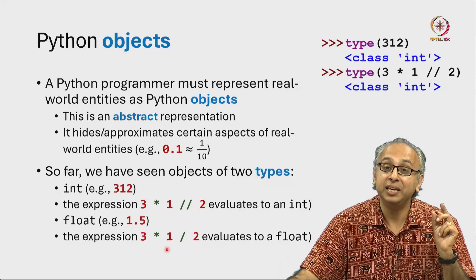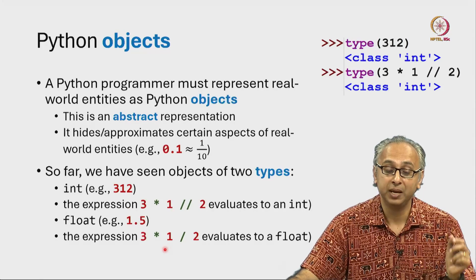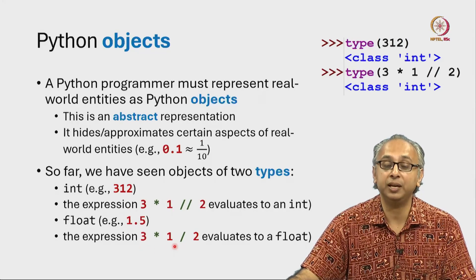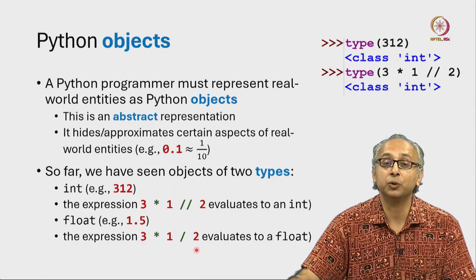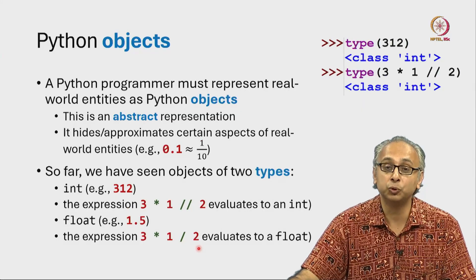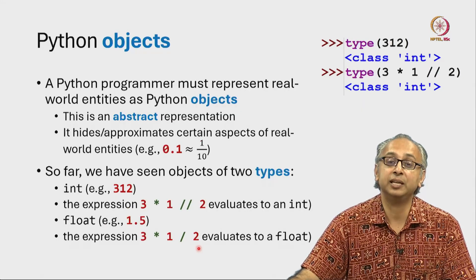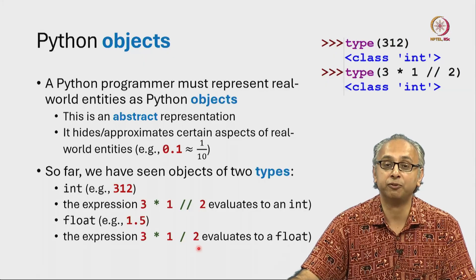So 3 times 1 is the integer 3 and when we take the integer 3 and do true division with the integer 2 that results in the float 1.5.